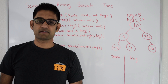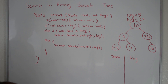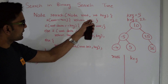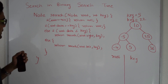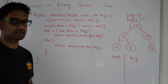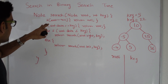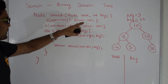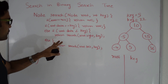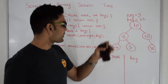Next let's look at the code for searching in a binary search tree. The name of the function is search. It takes the root of the binary search tree and the key we are looking for. It will return the node if the key is found, or it will return null if the key is not found. If the root is null it returns null. If the root data is same as key it returns root. Otherwise it goes left or right depending on whether root data is less than or greater than key.